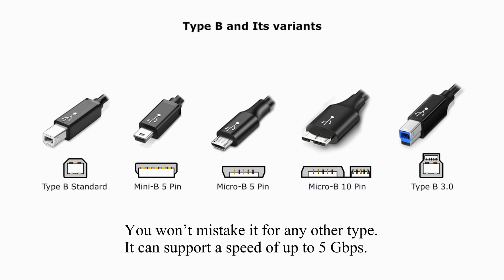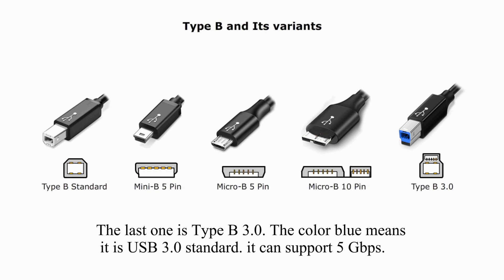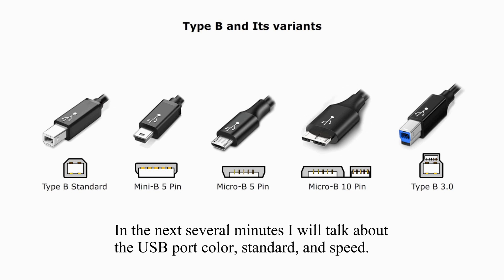10-pin Micro B can support a speed up to 5 Gbps. The last one is Type B 3.0 — the color blue means it is USB 3.0 standard and it can support 5 Gbps. In the next several minutes, I will talk about USB port color, standard, and speed.